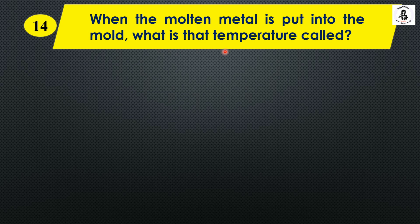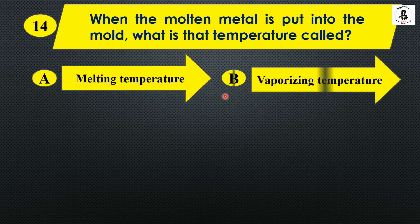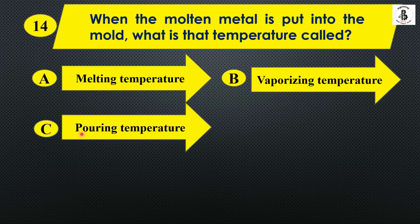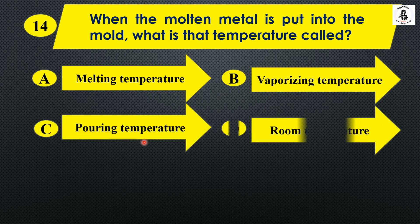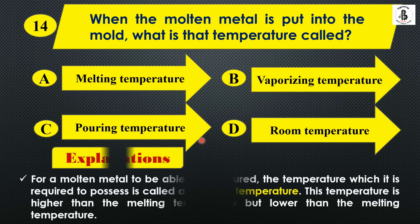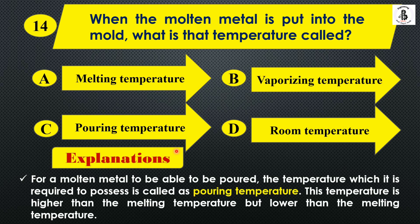Question fourteen: When molten metal is put into the mold, what is that temperature called? Option A: Melting temperature, Option B: Vaporizing temperature, Option C: Pouring temperature, Option D: Room temperature. The temperature at which molten metal is poured into the mold is called pouring temperature. This temperature is higher than the melting temperature because the metal needs to remain in molten form. The answer is Option C: Pouring temperature.